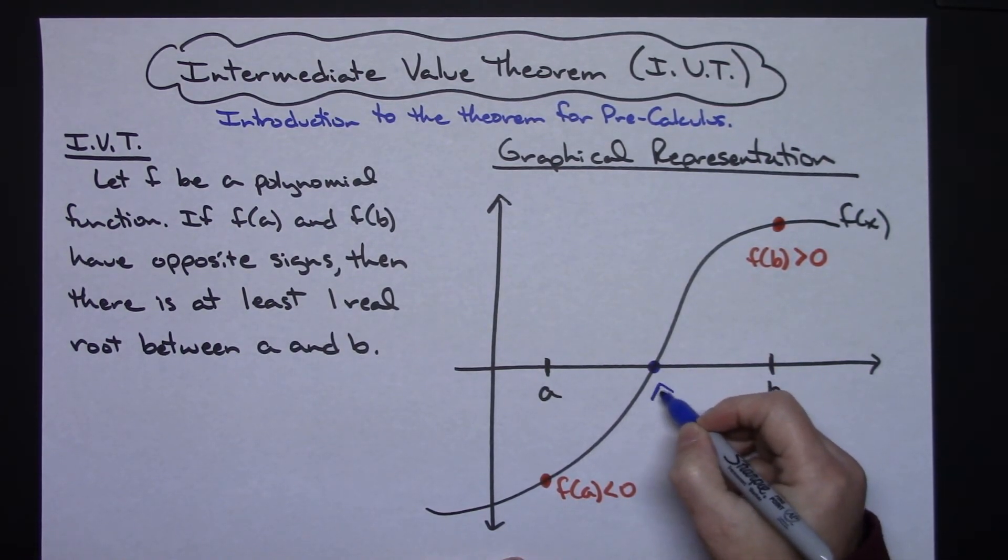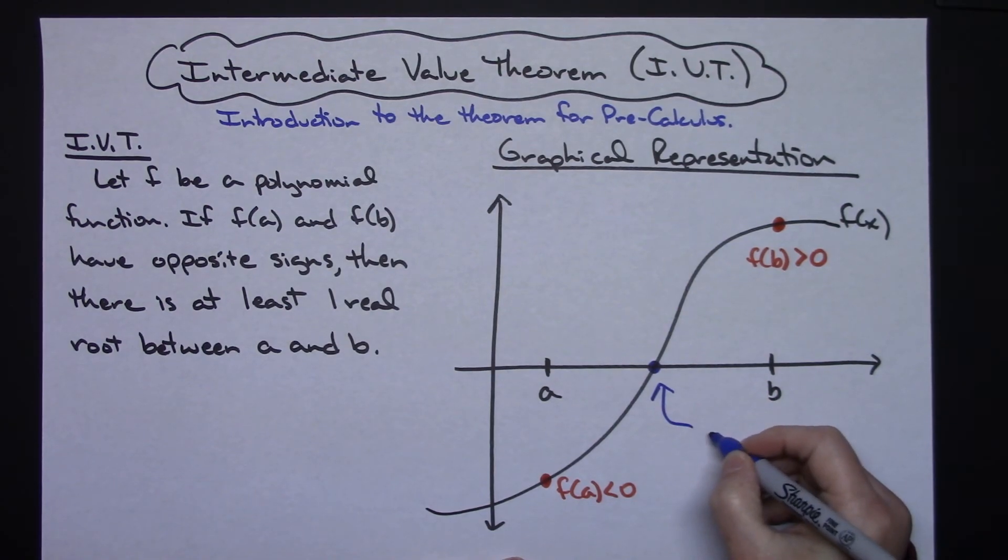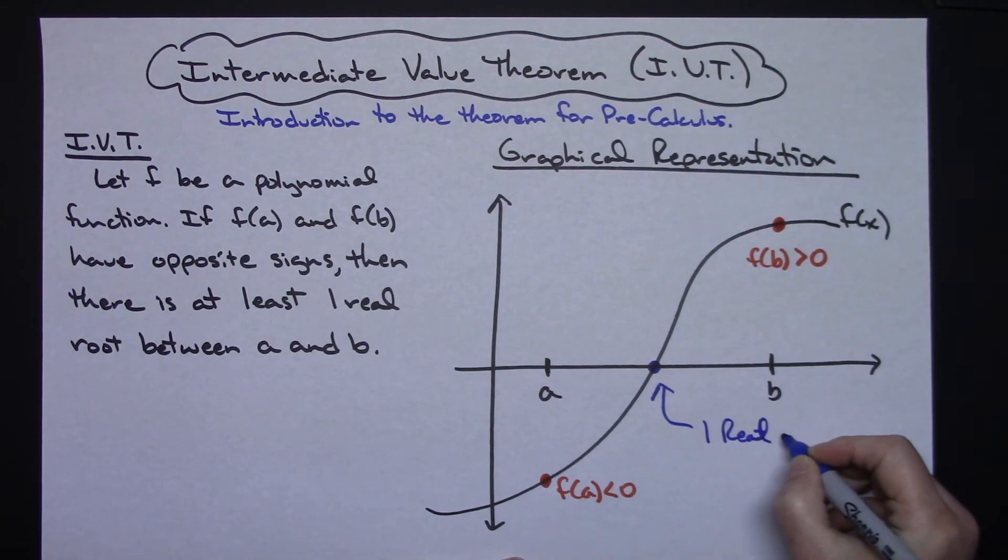So then now the theorem states that we have at least one real root. That right there is my one real root.